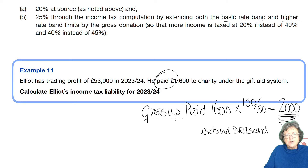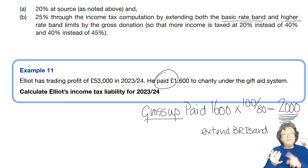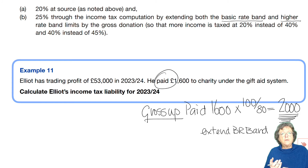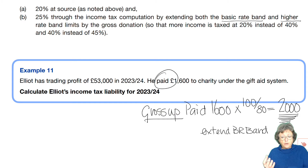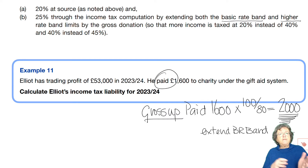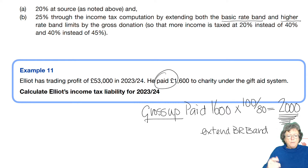That grossing-up calculation will get you marks because it shows you've read the question carefully, identified the £1,600 paid figure, and used the correct gross figure. You could get 2 marks for extending the basic rate band the first time you do it, and probably 1 mark on subsequent occasions. Let's look at how that would appear in a computation for Elliot.